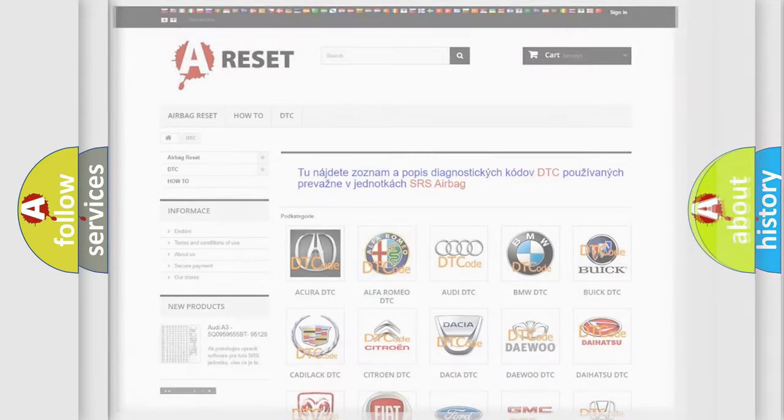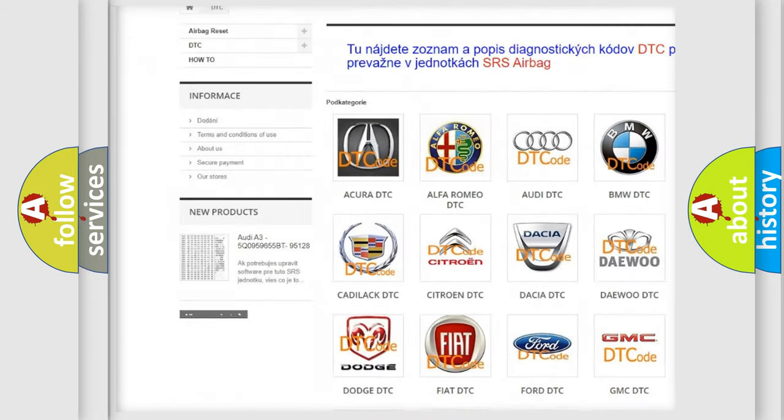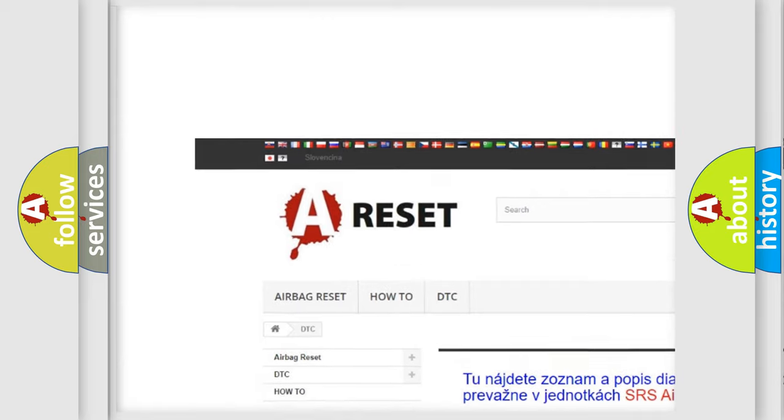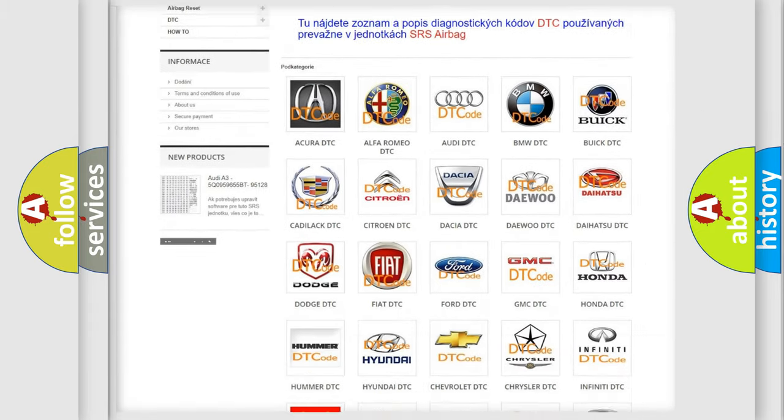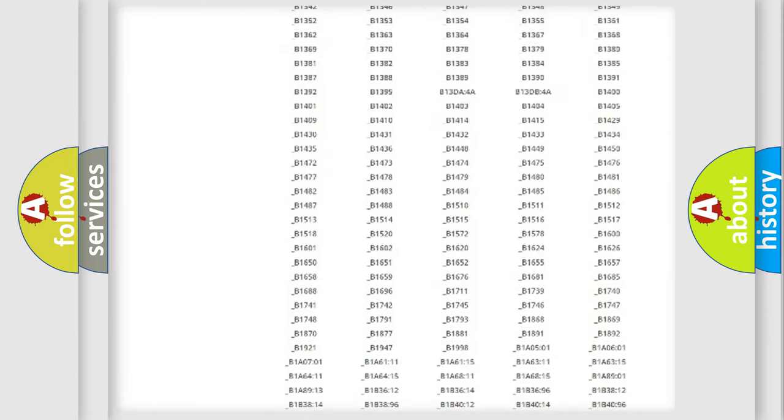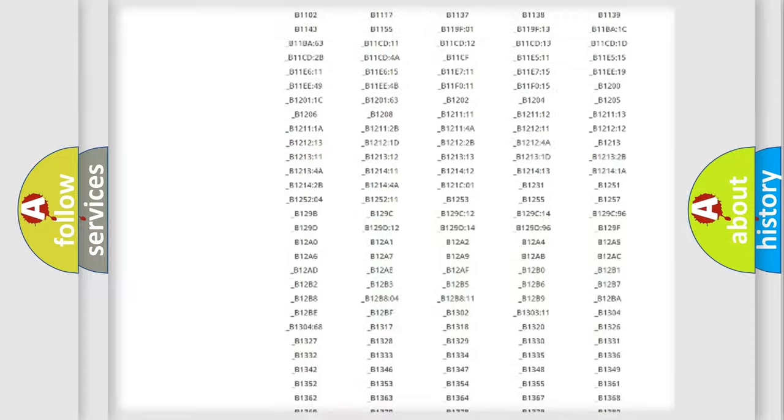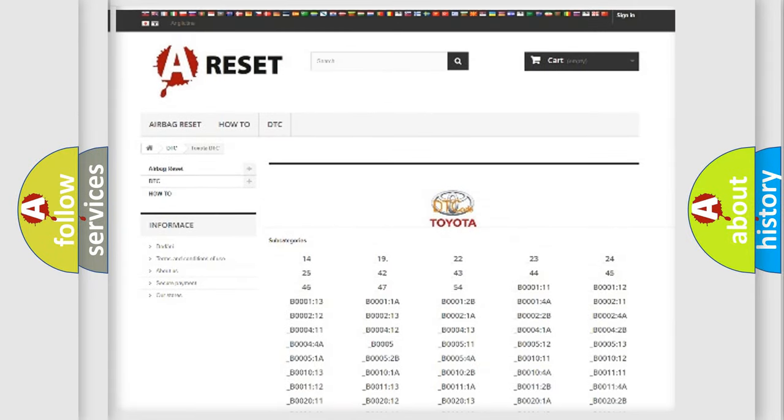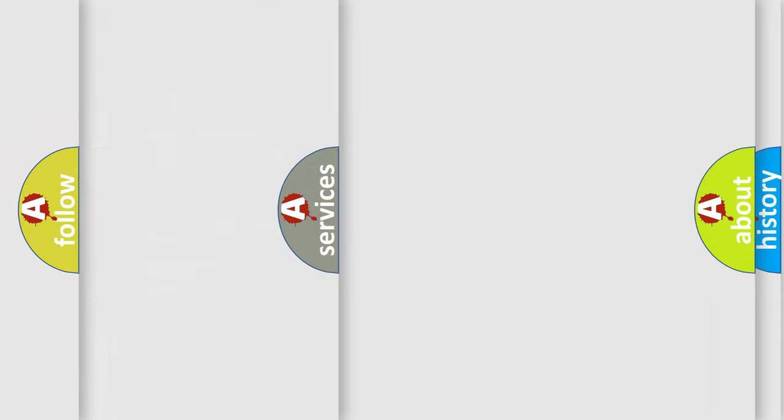Our website airbagreset.sk produces useful videos for you. You do not have to go through the OBD2 protocol anymore to know how to troubleshoot any car breakdown. You will find all the diagnostic codes that can be diagnosed in Toyota vehicles. Also many other useful things.